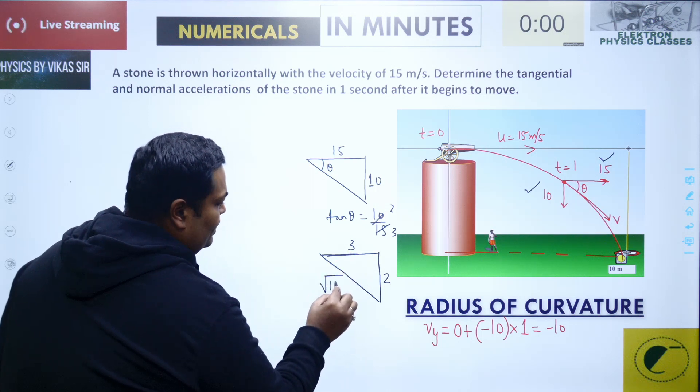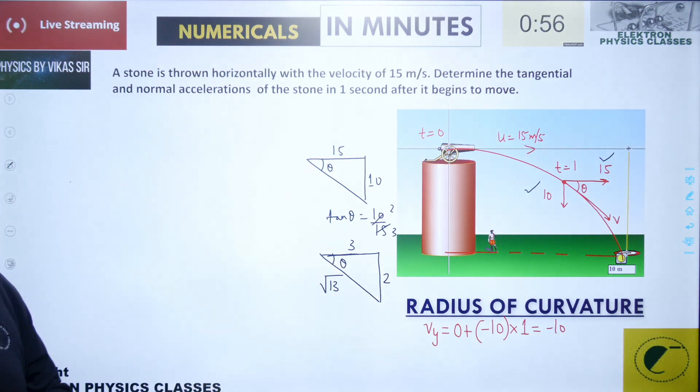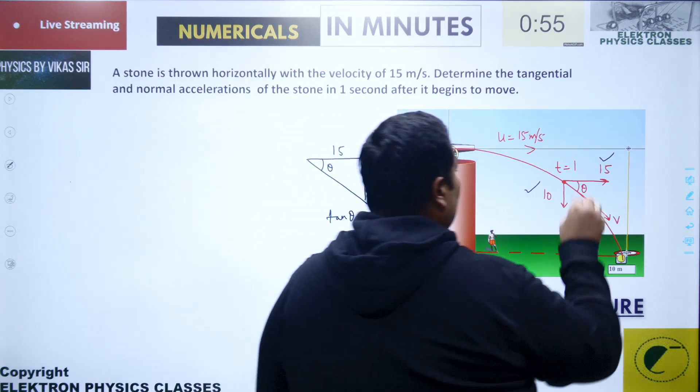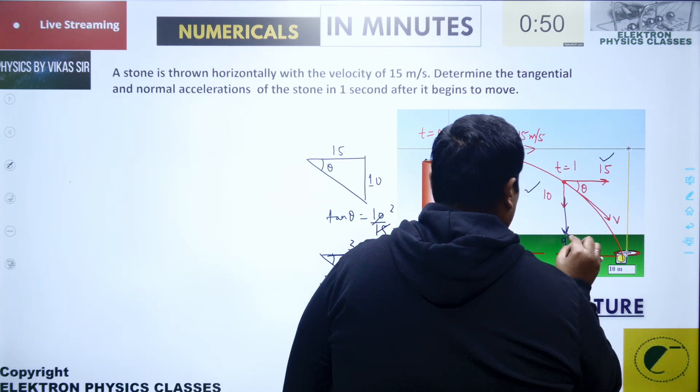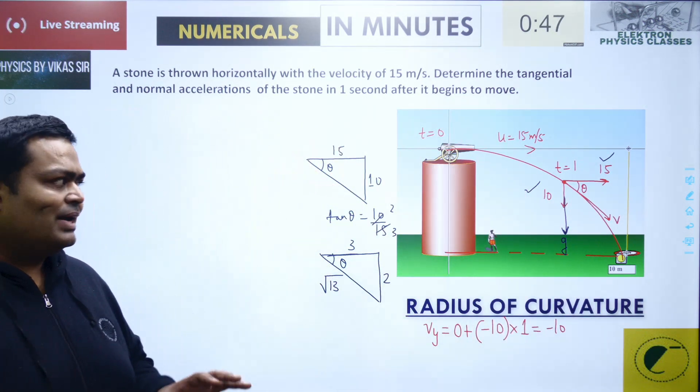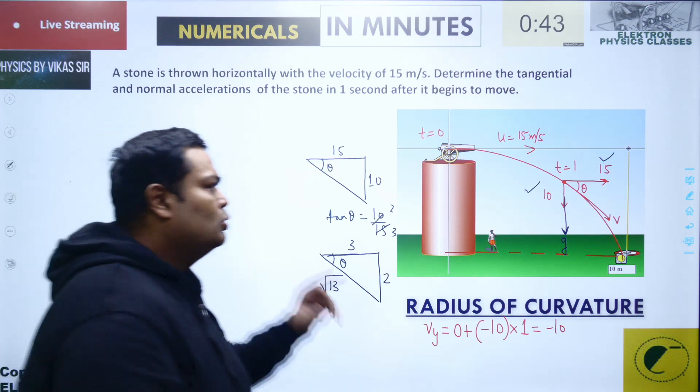From this I can get sin theta and cos theta. Now the acceleration is in this direction, equal to g. But I need components. First I need to sketch the axes—not the x or y axis, but normal and tangent.